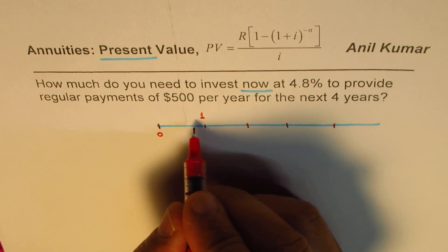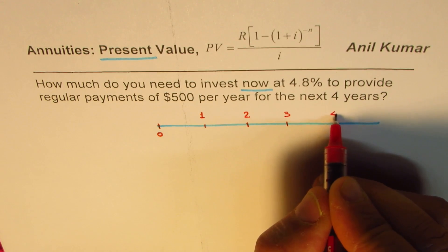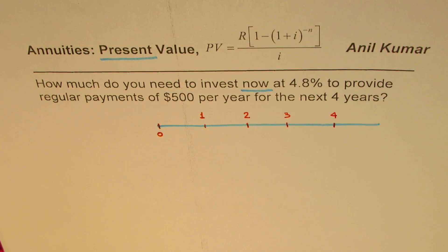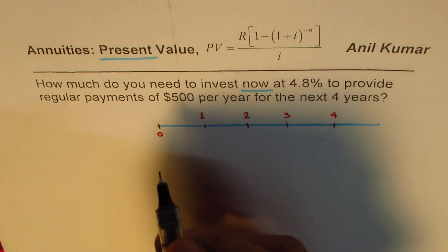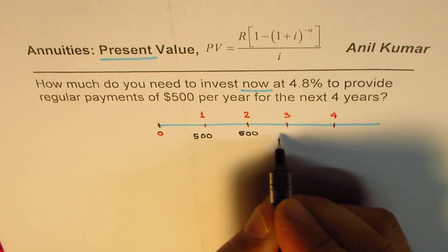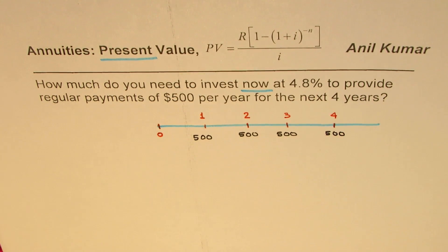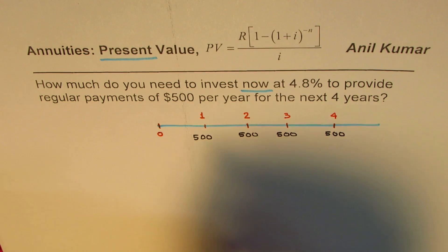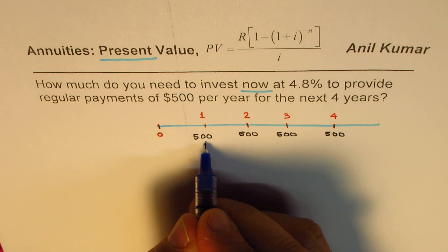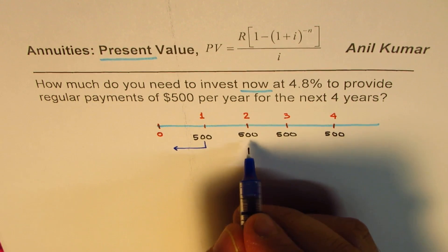To provide regular payments of $500 per year for the next four years, at the end of each year — year one, two, three, four — we need a regular payment of $500. The question is: how much do we invest now? Invest now means we need to find the present value.